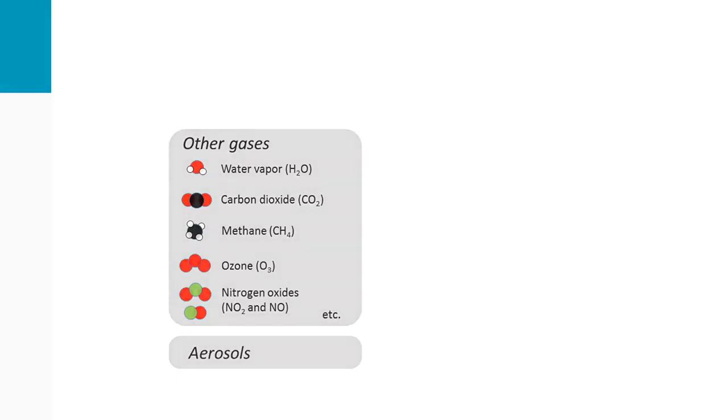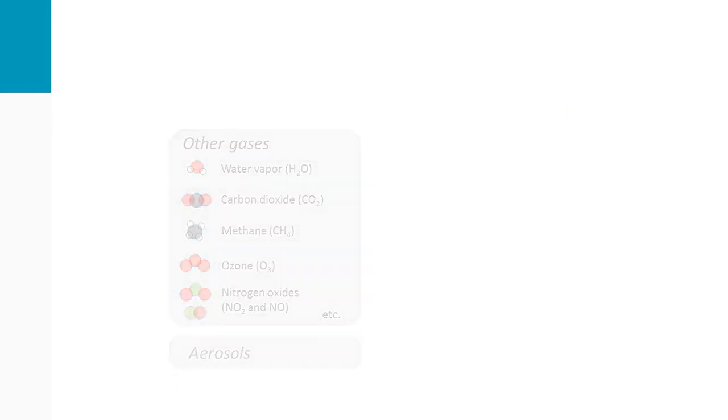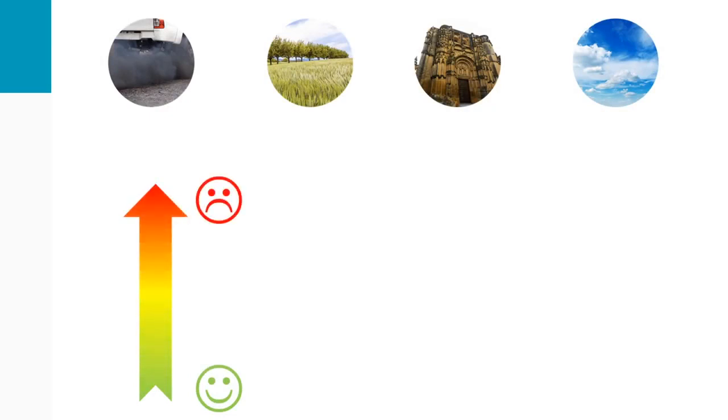Some of these substances present in trace amounts in our environment can have adverse effects either on human health, vegetation, material or climate. That's the reason why they are called air pollutants. When they reach harmful levels, the phenomenon is known as air pollution.